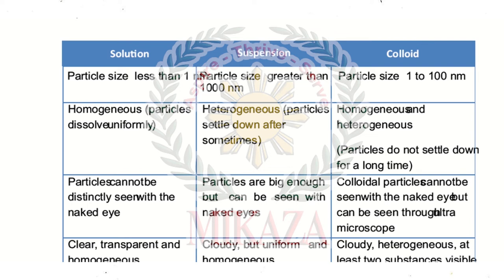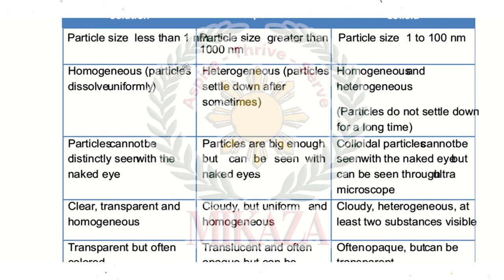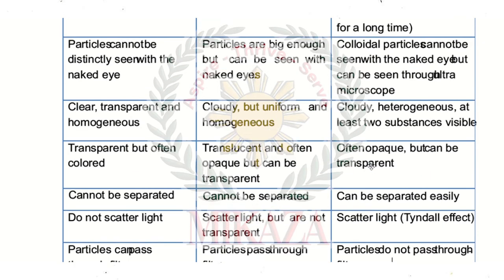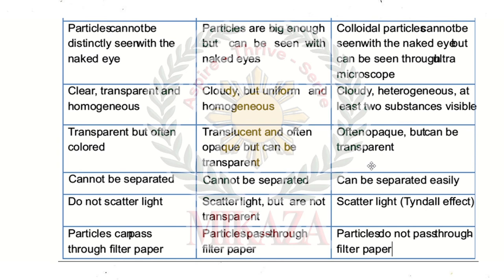In a colloid, we can see the particles microscopically but not with the naked eye. Suspension particles are large — if you mix particles in water and wait a few days, the particles will settle. A solution is clear and transparent. A suspension is cloudy and not transparent.